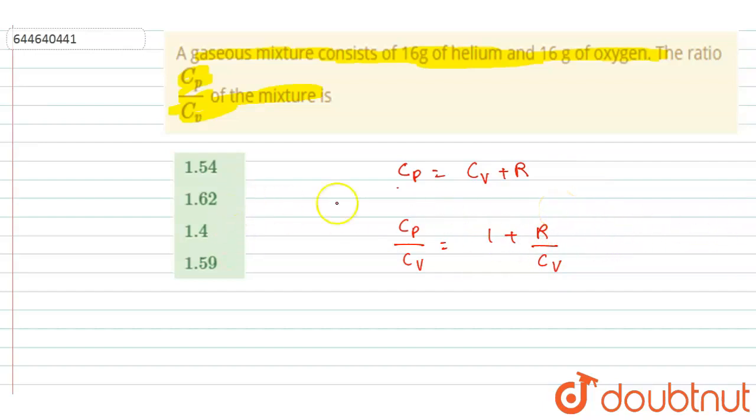So let us find out the Cv of this mixture. If you see, the number of moles of helium, we know that the number of moles will be the mass present divided by molar mass, so it will be 4. The number of moles of oxygen will be 16 by 32, it will be half. Now helium is monatomic, oxygen is a diatomic gas.